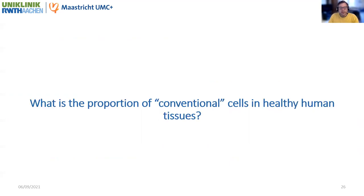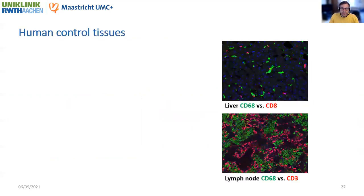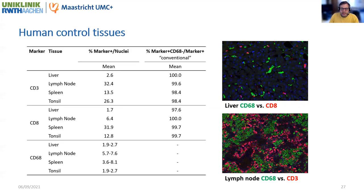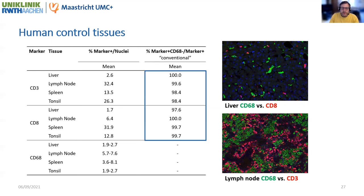To determine the proportion of conventional cells in healthy human tissues, we used tissue samples of liver, lymph node, tonsil, and spleen without gross pathology as controls. As expected, the secondary lymphatic organs — lymph node, tonsil, and spleen — presented high percentages of T cells and cytotoxic T cells. Looking at the proportion of conventional cells, we found that over 97% of the respective cells presented a conventional pattern, confirming that co-expressing hybrid cells were very rare within control tissues.